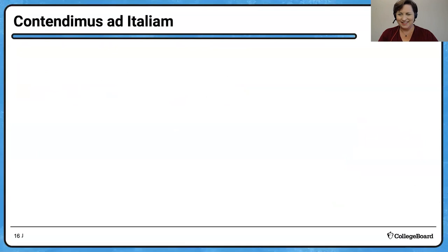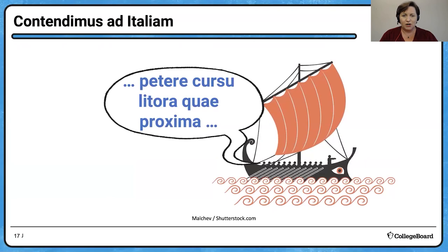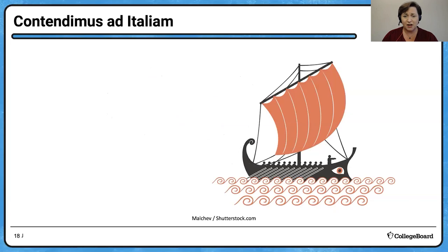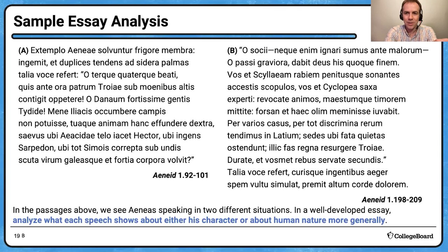Let's go to Italy — or at least try to go to Italy. Let's look at some examples from the Latin. In Book One we see: 'Defessi Aeneidae contendimus' — 'We, tired people of Aeneas, are aiming, stretching towards petere cursu litora quae proxima — to seek the shores which are closest on our course.' And 'at Libyae vertimur ad oras' — 'and we are turned to the shores of Libya, of Africa.'